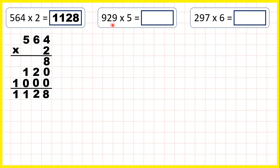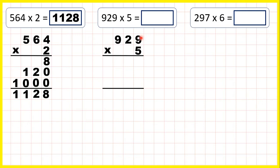Now nine hundred and twenty-nine times five — we set the question out in the same way, and again we start by multiplying our ones. Nine times five is forty-five. On to our second answer line, we need a zero as the last digit in our ones because we're now multiplying the tens digits.